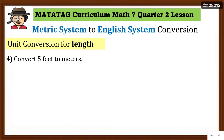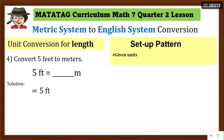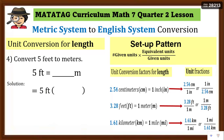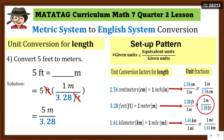So 16.4 feet ay may katumbas na limang meters. Next, number four: convert 5 feet to meters. Write the equation and set a pattern — since the given unit is feet, i-convert mo ng meter. Yung feet dapat nasa denominator, yung meter nasa numerator. We have to use 1 meter over 3.28 feet. Cancel 'feet,' multiply 1 meter times 5 — 5 meters, divide by 3.28 — equals 1.52 meters (rounded to two decimal places).